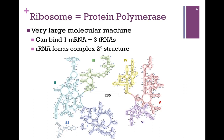The ribosomal RNA forms a very complex three-dimensional structure. What we have illustrated here is the two-dimensional structure for the two rRNA molecules that comprise the large subunit in the bacterial system. On the lower left you'll see the 5S rRNA. The rest of the molecule is the 23S ribosomal rRNA — a very long, complex structure. What you're seeing are the hydrogen bonding base pairings between complementary base pairs within the molecule, forming a very complex two-dimensional structure that folds up into a very distinct three-dimensional structure.